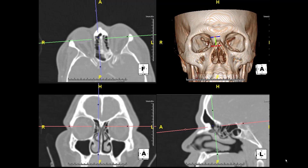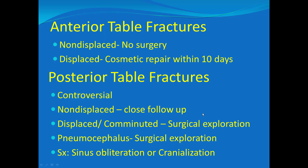Here are some MPRs and 3D reconstructions showing the location of the naso-frontal duct, which goes into the hiatus semilunaris. If the anterior table of the frontal sinus is fractured and not displaced, surgery is typically not needed. If it is displaced, they may choose surgery for cosmetic repair. If the posterior table is fractured, it's a bit controversial, but these will frequently be surgically repaired. If non-displaced, close follow-up may be chosen. If there are signs of violation extending into the cranial vault, neurosurgery may be required.